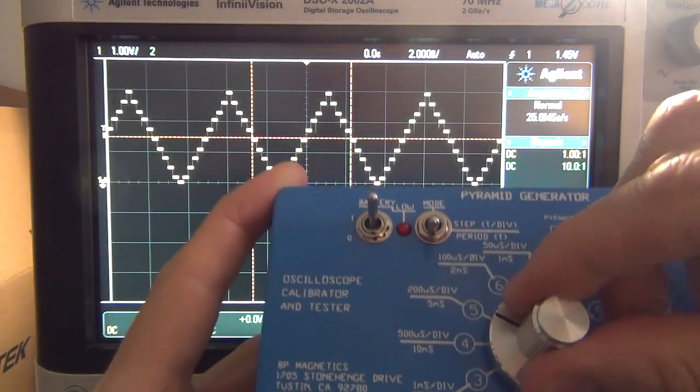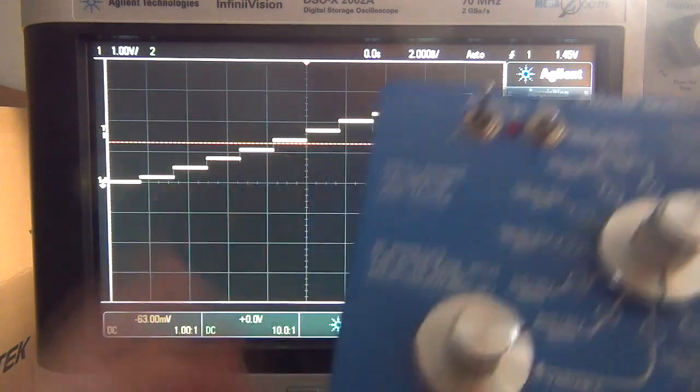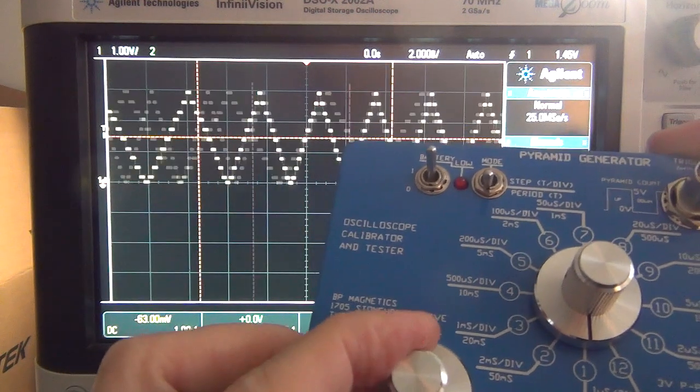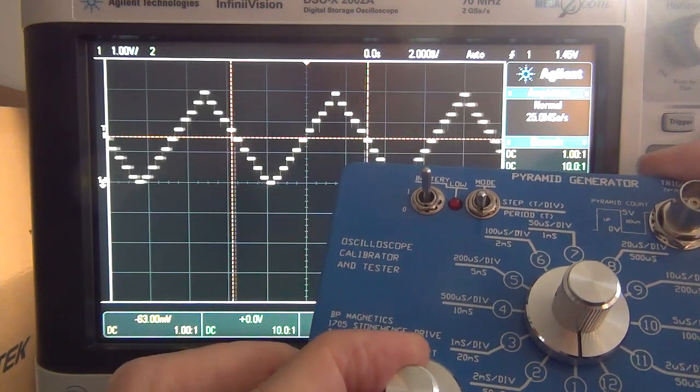I'll also just demonstrate the variable mode so if I click right down to the variable mode over here and then you use this knob you can see that you can actually vary the size of the actual triangle signal.